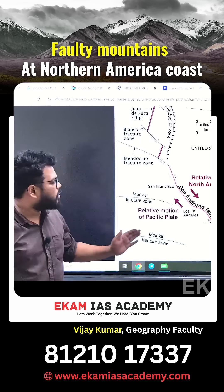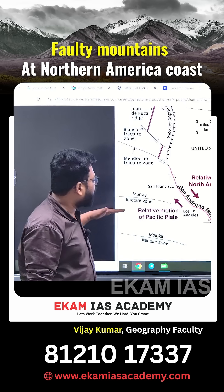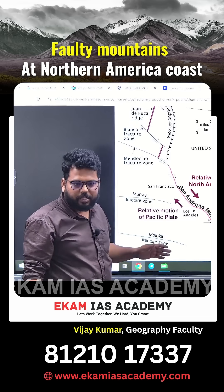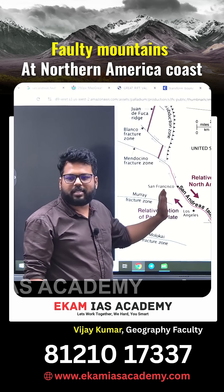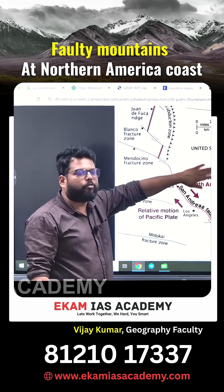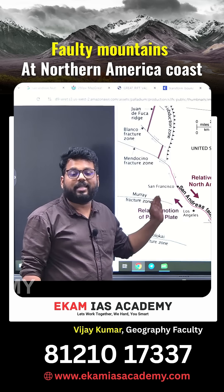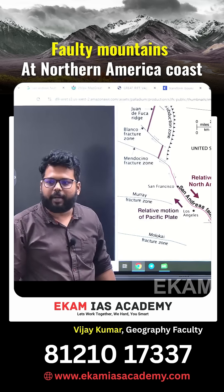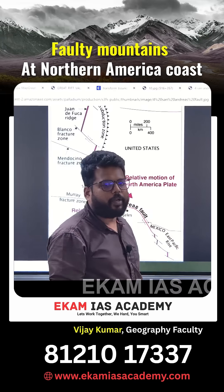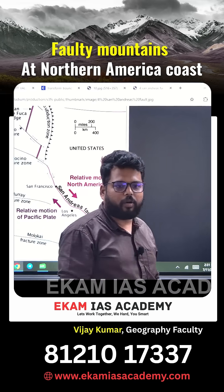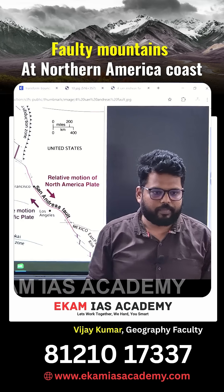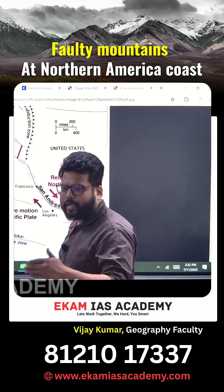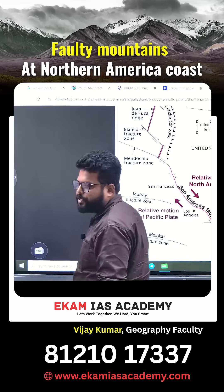The San Andreas Fault is also located along the convergent plate boundary, and the earthquake there comes as a result of subduction — not merely as a result of the transform plate boundary. The rock movement along the San Andreas will be explained further — how exactly the earthquake occurs in the San Francisco region.